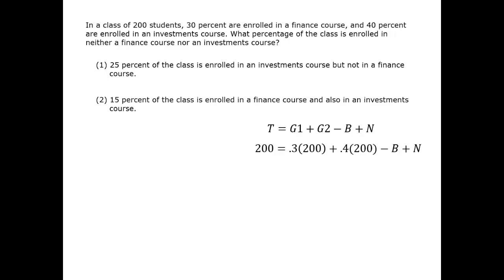The question is asking us for N, the number or percentage which is enrolled in neither a finance course nor an investments course. Therefore, from the data statements, the thing that we're going to be looking for primarily is B, the number that are enrolled in both classes.